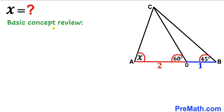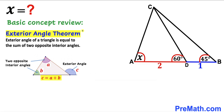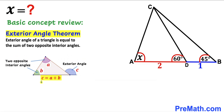Before we proceed, let's recall the exterior angle theorem. According to this theorem, the exterior angle of a triangle is equal to the sum of the two opposite interior angles. Here, angle C is our exterior angle, while angles A and B are the opposite interior angles, such that angle C equals A plus B.